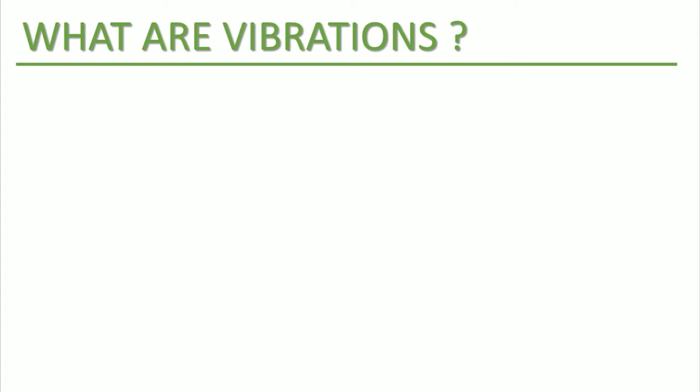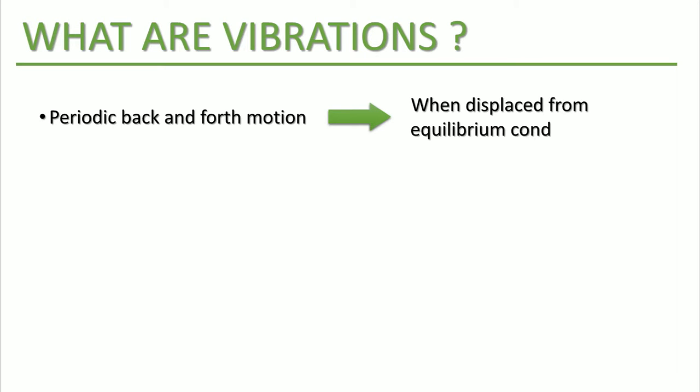What are vibrations? Vibrations are a mechanical phenomenon where oscillations occur at the equilibrium point. Normally, they are the periodic back and forth motion that is generated when we displace an object from the equilibrium condition.